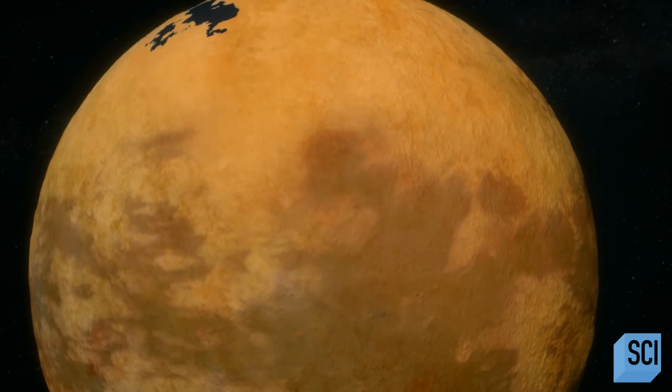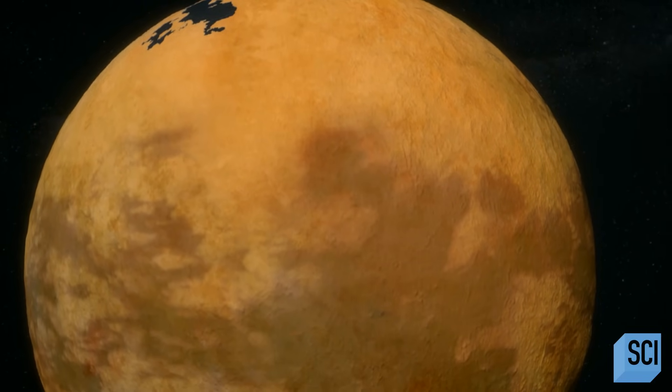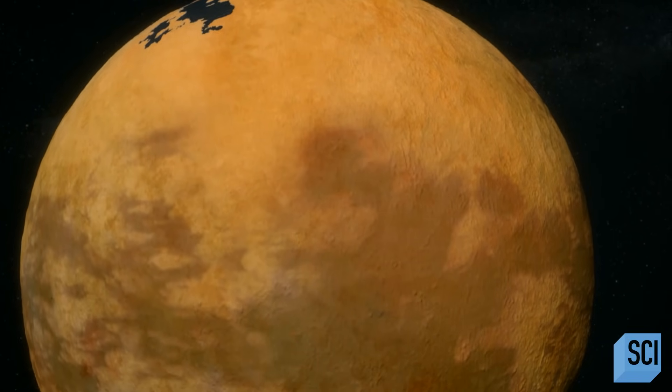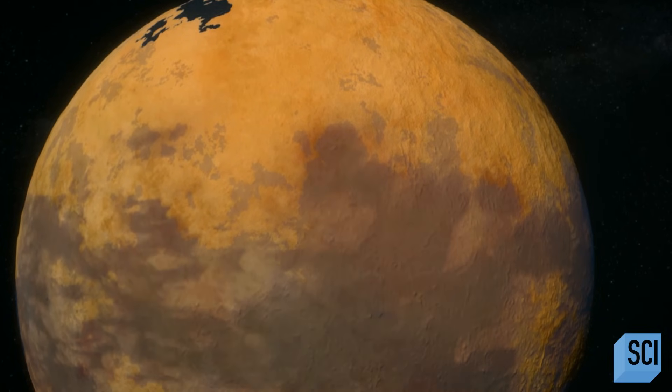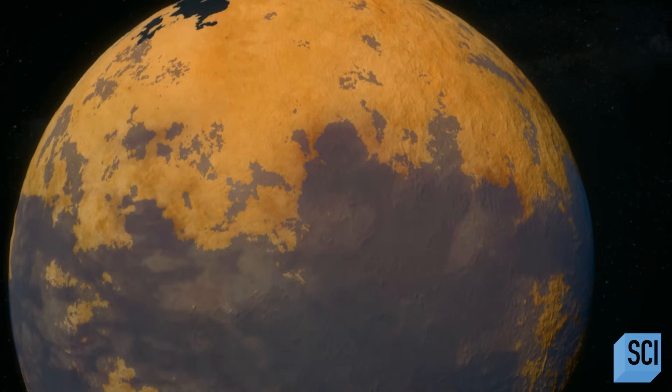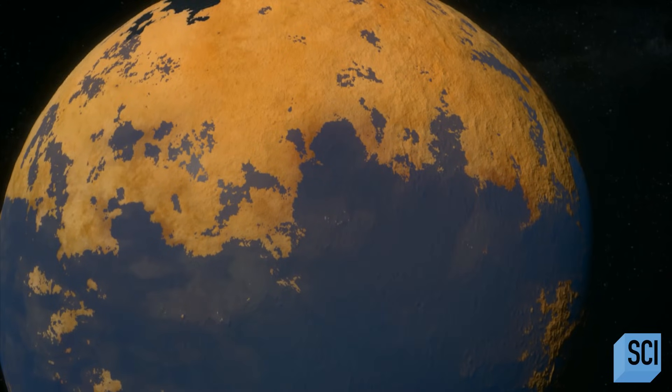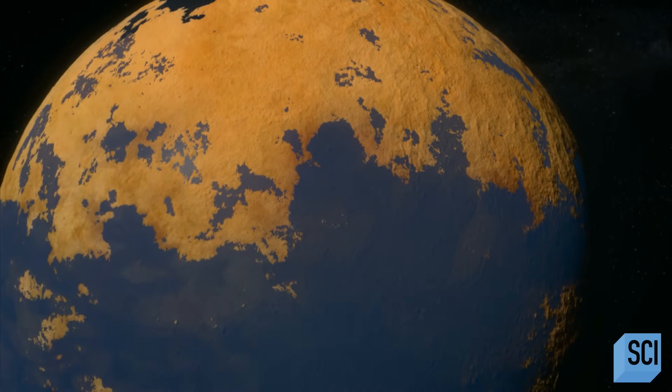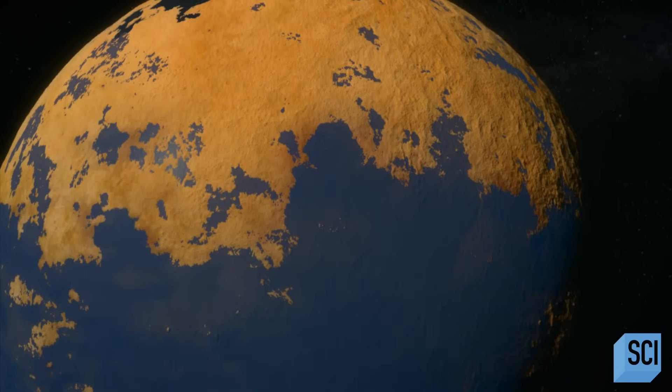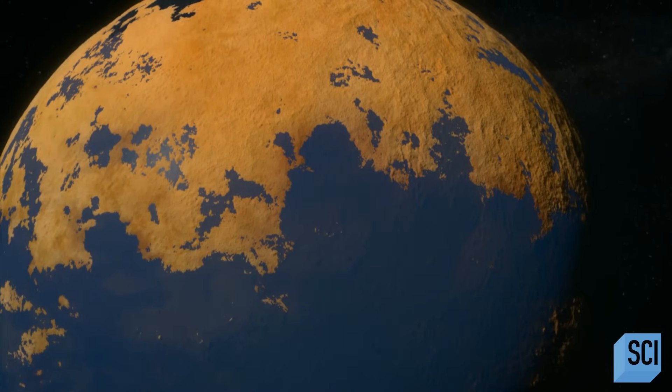The dense, smoggy atmosphere will clear and allow sunlight through. The surface temperatures will rise, and the ice will melt. The moon will become a primordial Earth for hundreds of millions of years. Plenty of time for life to emerge.